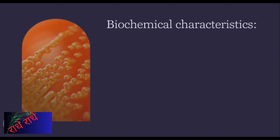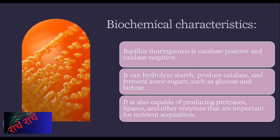Bacillus thuringiensis is a species of gram-positive, soil-dwelling bacterium, known for its unique biochemical characteristics, including being catalase-positive and oxidase-negative, and having the ability to hydrolyze starch, produce catalase, and ferment certain sugars. Additionally, this bacterium is capable of producing proteases, lipases, and various other enzymes, allowing it to acquire its required nutrients.